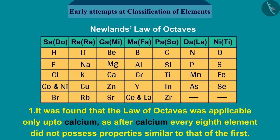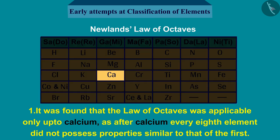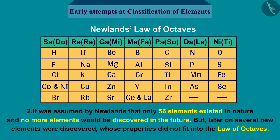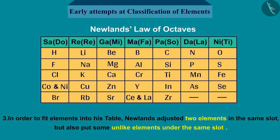We will now discuss the drawbacks of Newlands' Law of Octaves. First, it was found that the law of octaves was applicable only up to calcium, as after calcium every eighth element did not possess properties similar to that of the first. Second, Newlands assumed that only 56 elements existed in nature and no more elements would be discovered, but later several new elements were discovered whose properties did not fit into the law of octaves.